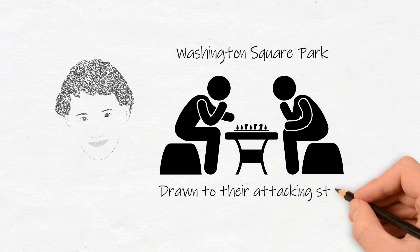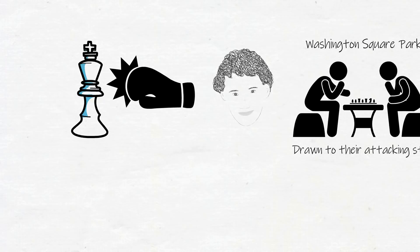Josh first gravitated to chess after watching chess hustlers in New York's Washington Square Park play aggressive speed chess. He was drawn to their wild, aggressive, attacking style of chess. Everything Josh learned early on helped him be a better attacking player.